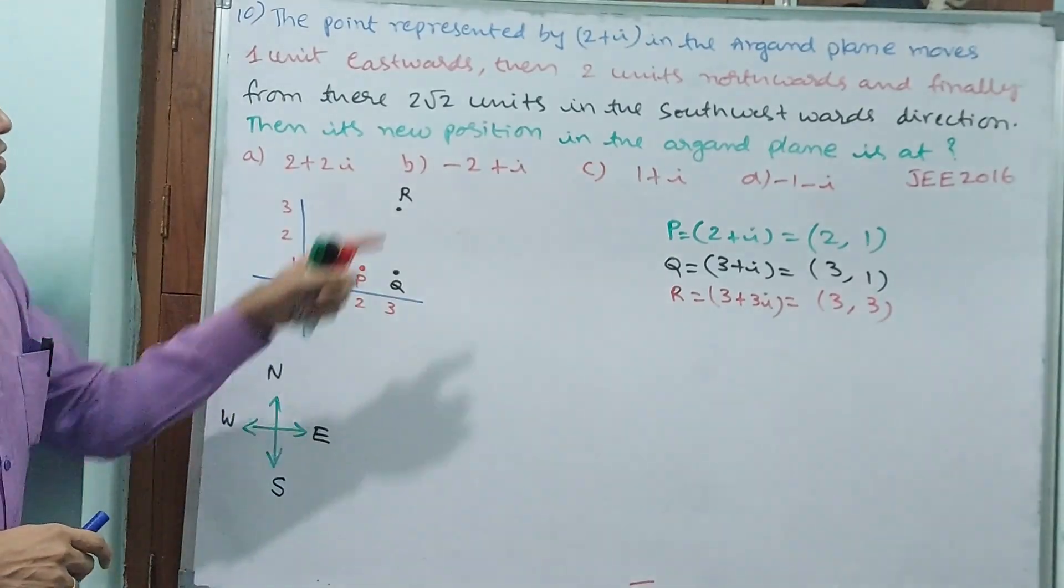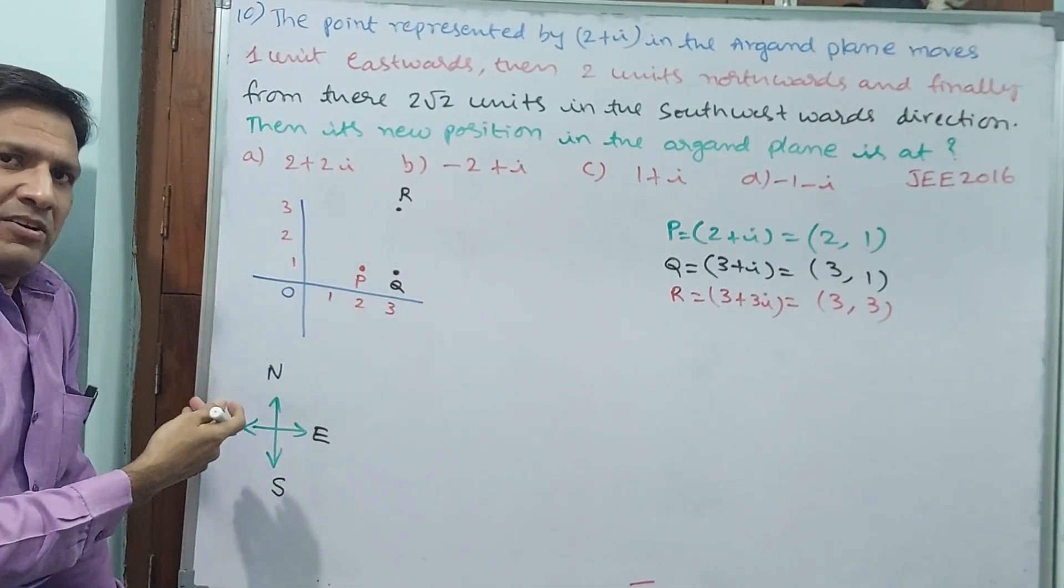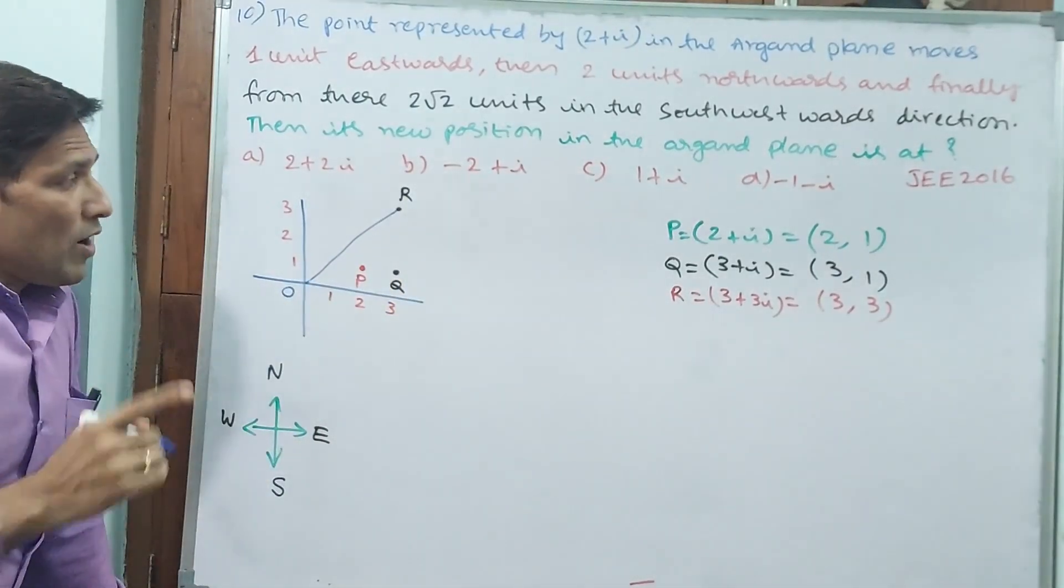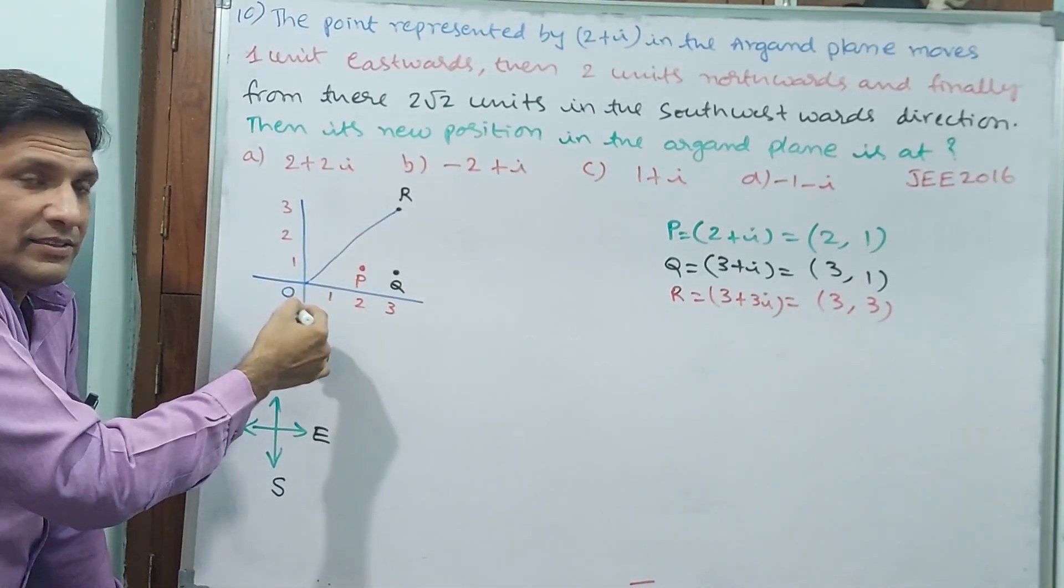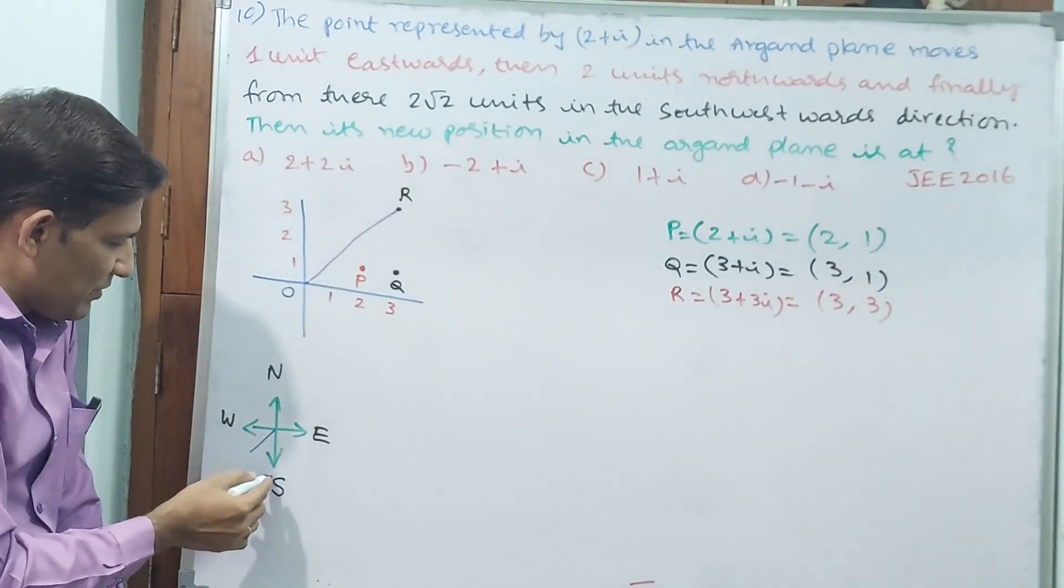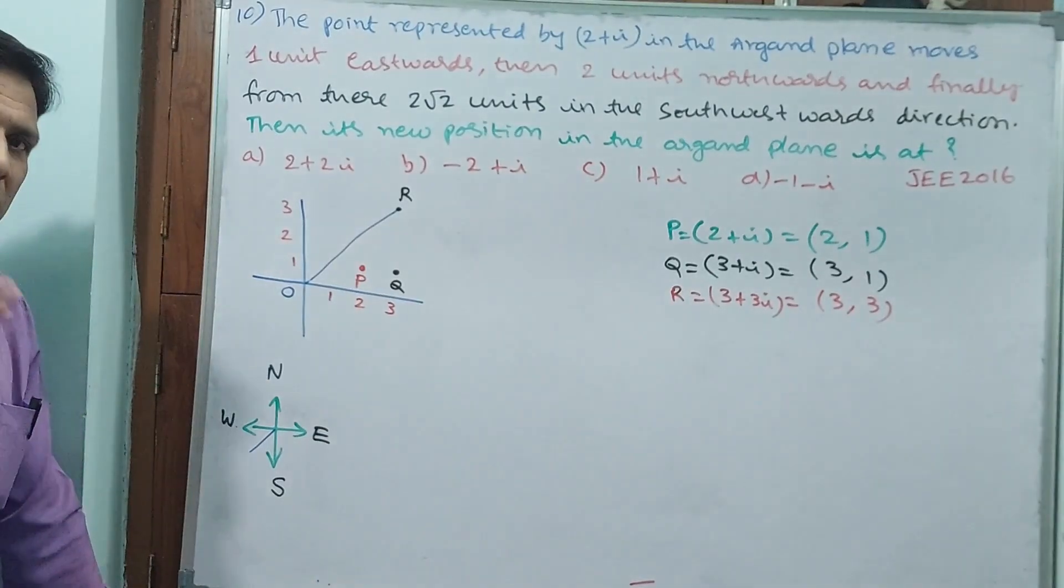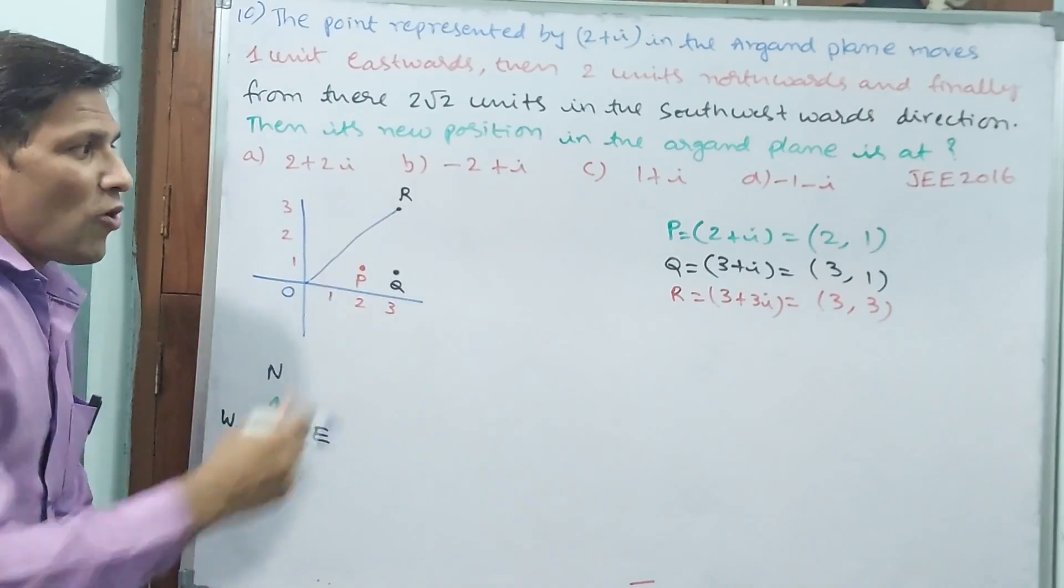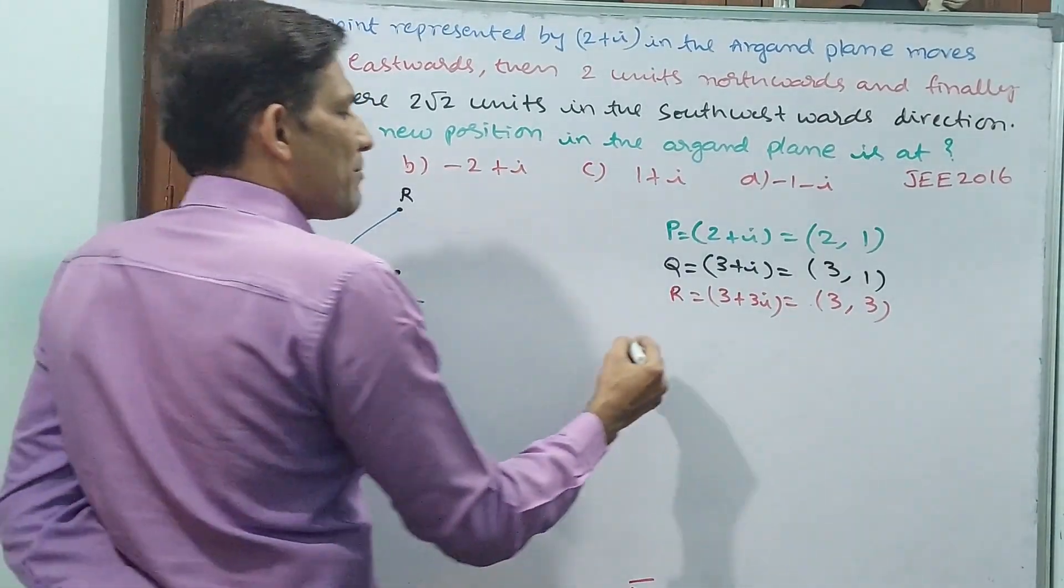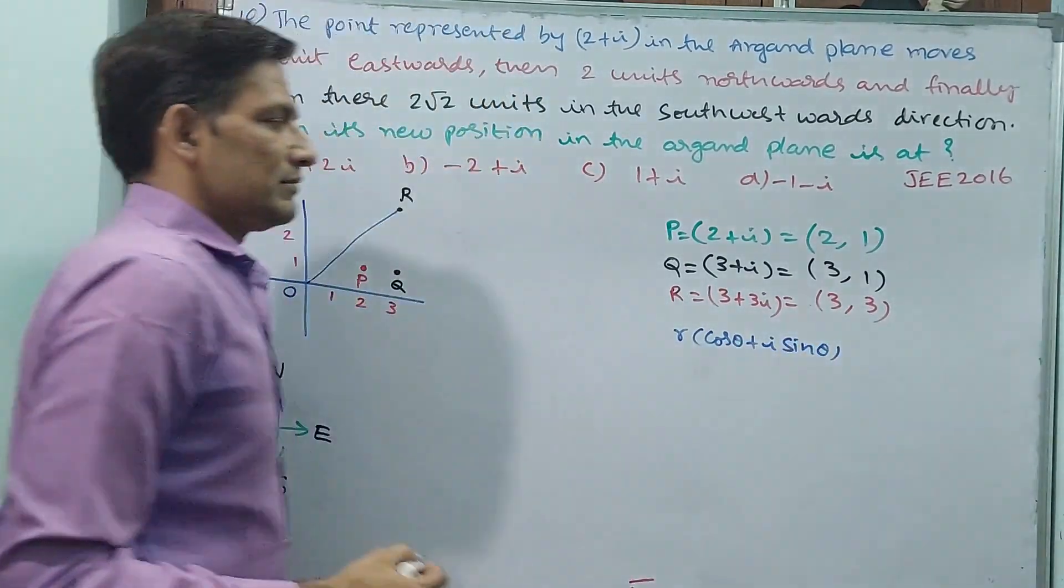Now stop. Further moving 2 root 2 units. We will analyze them. These positions based on origin only we will take normally. Why? Because this position based on R only we will take normally. Now observe carefully. R is towards origin. What is this direction? Is it the same direction? That means southwest. Southwest direction only, origin is there from R.